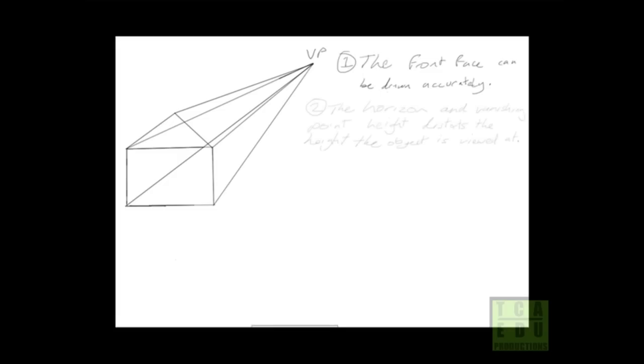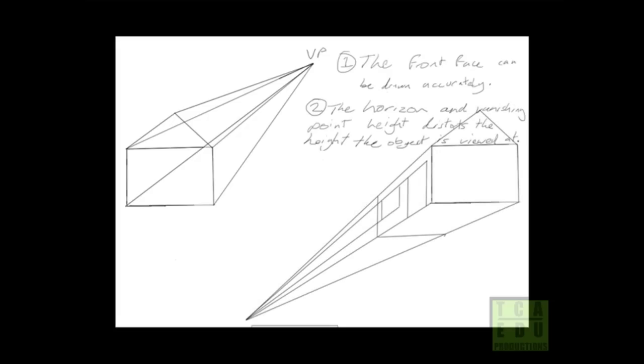The second rule is that the horizon and vanishing point height distorts the height at which the object is viewed, and we can see that by bringing up another example. This example has been drawn with the vanishing point below the front face, which gives us the impression that we are looking from a height lower than the building, and we can see underneath it.